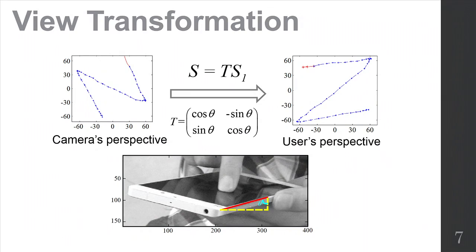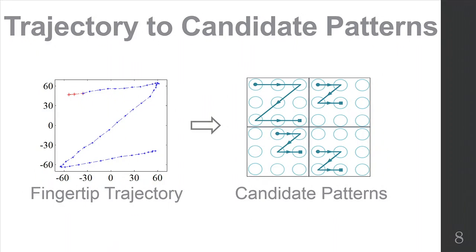Bob can use this formula to transform from the camera's perspective to the user's perspective. Here, the viewing angle theta in this formula can be figured out as shown in this picture, as shown at the bottom.